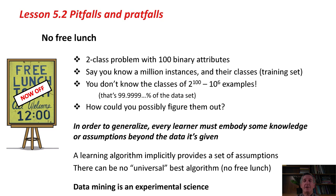In order to generalize, every learner must embody some knowledge or assumptions beyond the data it's given. Each learning algorithm implicitly provides a set of assumptions. The best way to think about those assumptions is to think back to the boundary visualizer we looked at in Lesson 4.1. You saw that different machine learning schemes are capable of drawing different kinds of boundaries in instance space, and these boundaries correspond to a set of assumptions about the sorts of decisions that we can make.